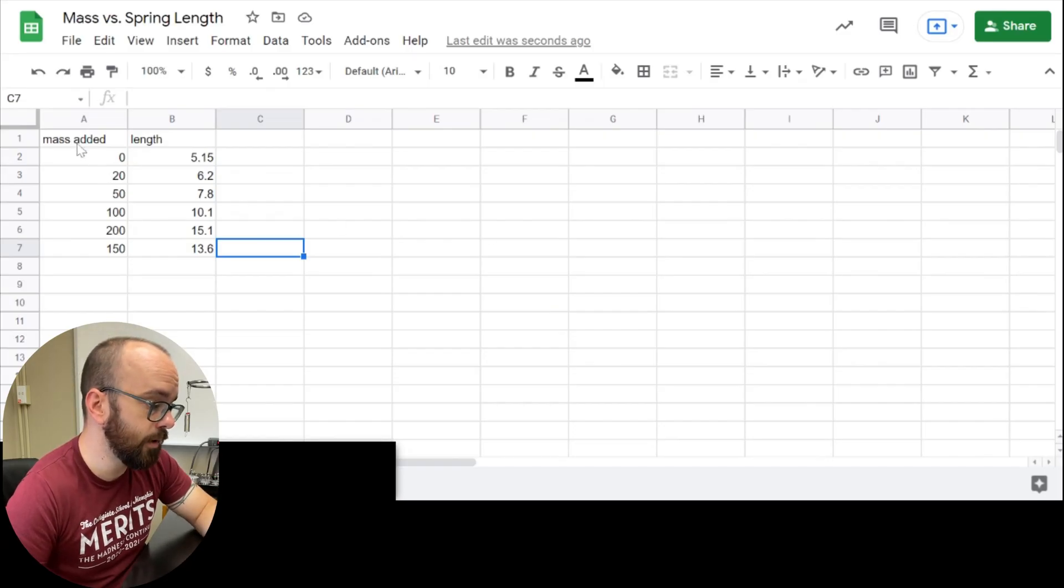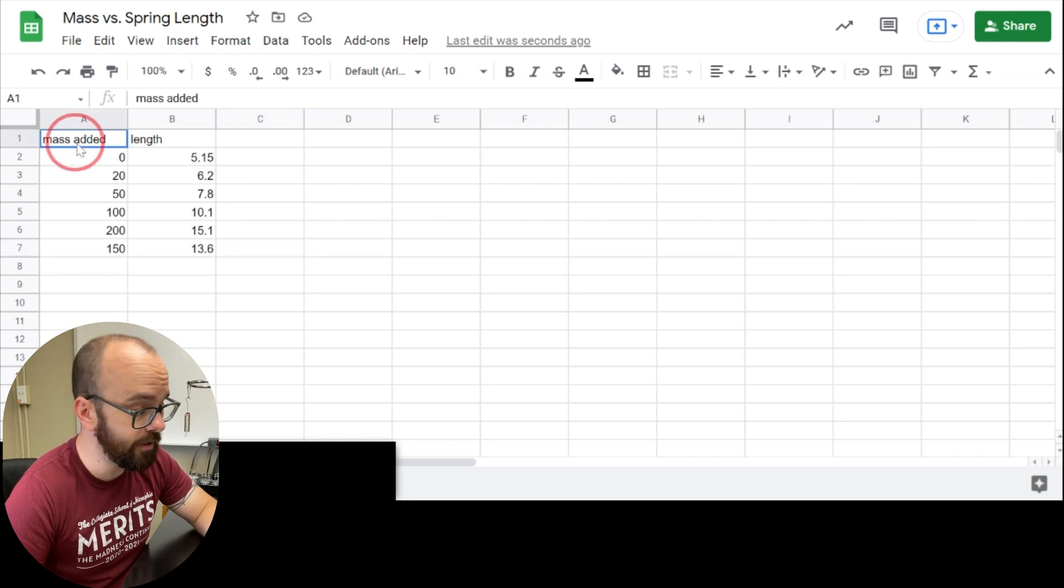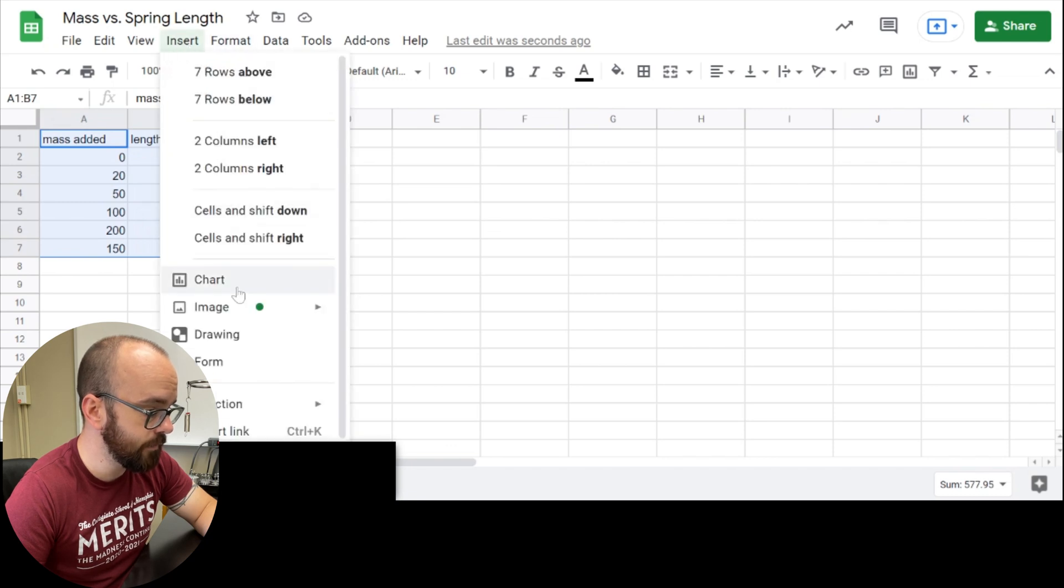So I have a Google spreadsheet pulled up here and I've put my data in there. So that's all that I've done so far. To do a graph and a best fit line, I'm going to click and highlight all of my data. I'm going to go to insert, chart.